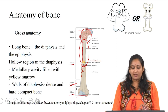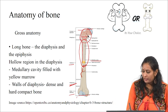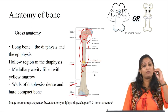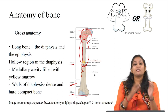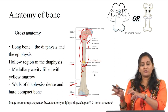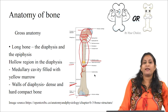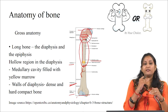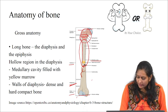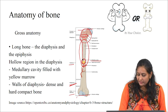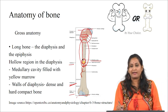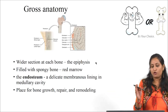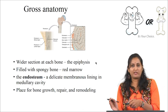The metaphysis is the narrow area which has an epiphyseal growth plate and a cartilage layer. This epiphyseal growth plate becomes an epiphyseal line when bone growth stops at early adulthood, approximately at the age of 18 to 21 years, and the cartilage layer is replaced with osseous tissue. The medullary cavity is lined by a delicate membranous lining called the endosteum, where bone growth, repair, and remodeling occur.